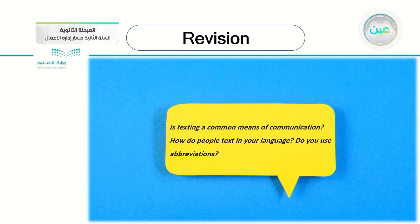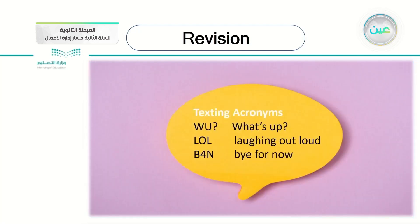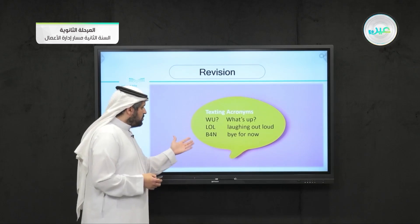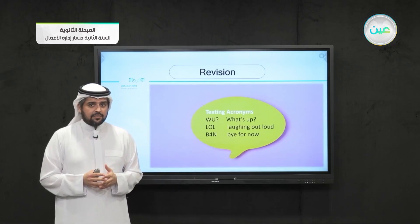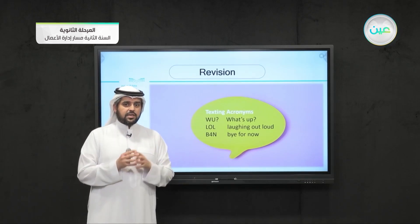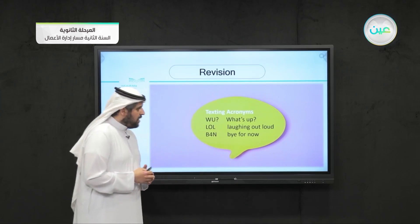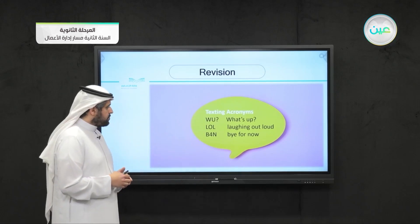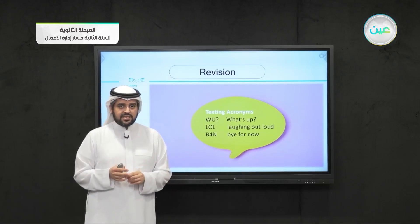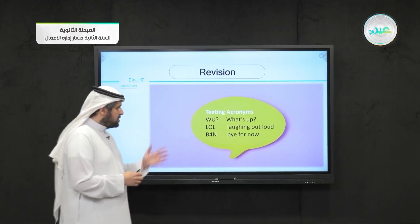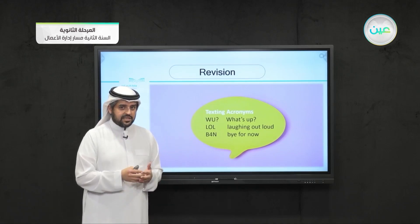So what do you know about texting? Is texting a common means of communication? How do people text in your language — do you use abbreviations? We answered all of these questions in the previous lesson and focused on abbreviations. We took some acronyms: W-U means 'what's up,' L-O-L means 'laughing out loud,' and B-4-N means 'by for now.' Texting is now the most common way of communication. Try to learn as many of these acronyms and abbreviations as you can.